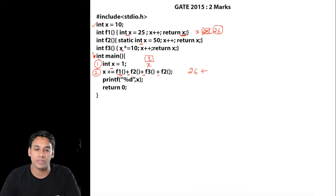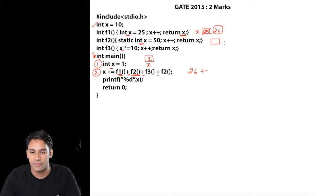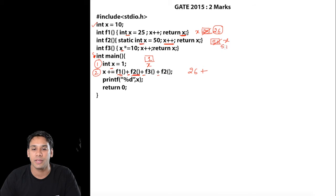Then we execute the f2 function. In the f2 function we have a static integer x, which is a static variable storing the value 50. In the next line we do x++, incrementing it to 51, and then we return this value. Therefore 51 is returned by f2.